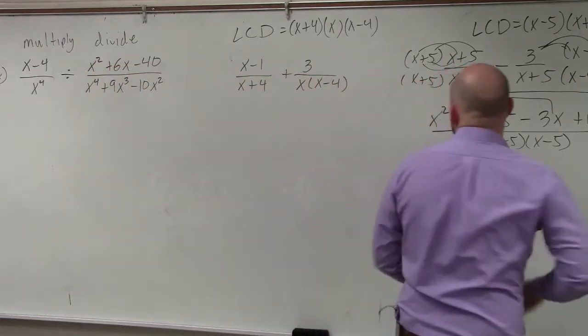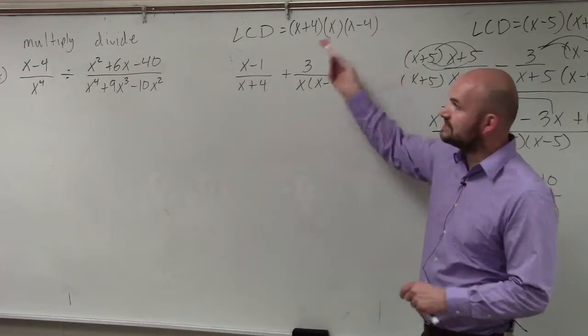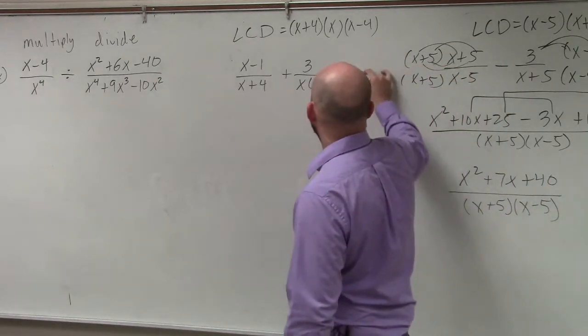So we multiply each one. To get us to x times x minus 4 to give us this LCD, I'm just going to have to multiply by x plus 4.